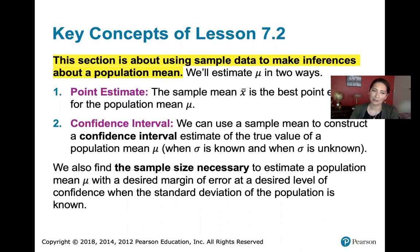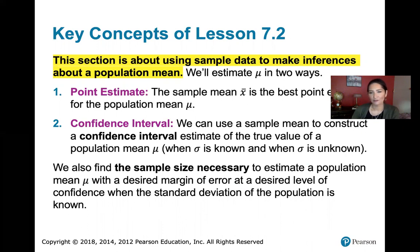But here it's going to be a little bit different. In order to compute a confidence interval when the population standard deviation is unknown — which is usually the case — we have to familiarize ourselves with the student t distribution. We're going to learn about finding critical values on that distribution, and that is going to allow us to compute confidence intervals in the next learning outcome.